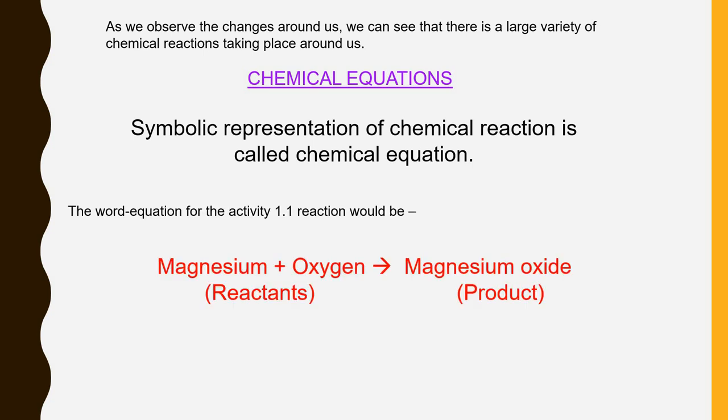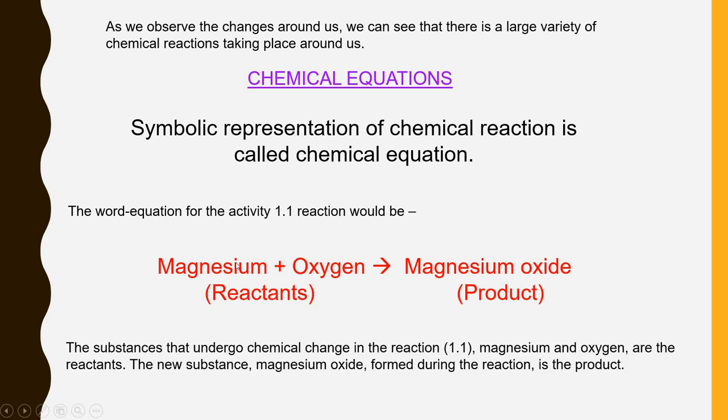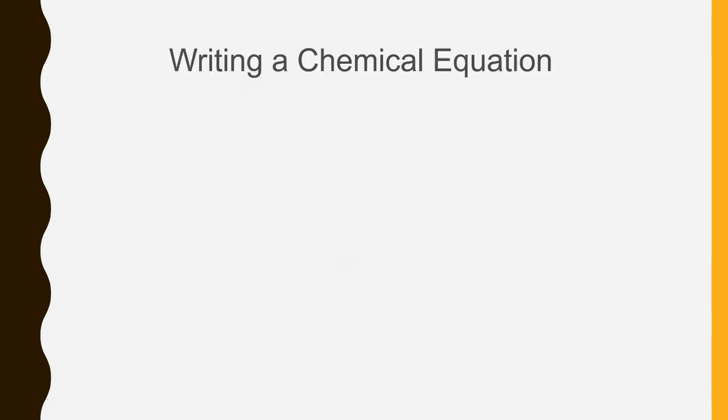In activity 1.1 we have seen a word equation that is magnesium when react with oxygen it gives magnesium oxide. Before arrow these are called reactants whereas after arrow the formation is known as product. Reactants are always placed towards left hand side of arrow whereas products are always placed towards right hand side of arrow. So this is a word equation. Now how to represent them in a chemical equation.